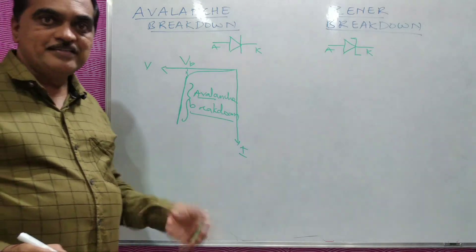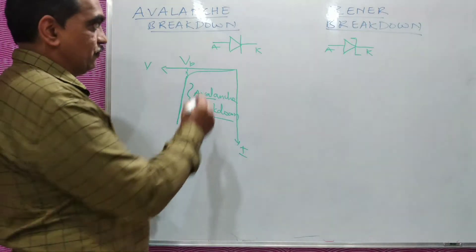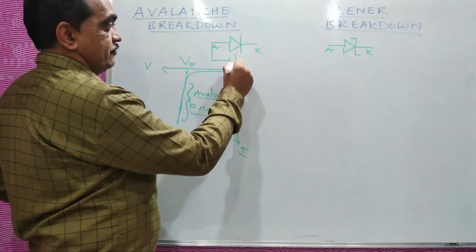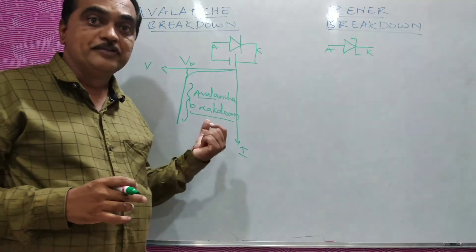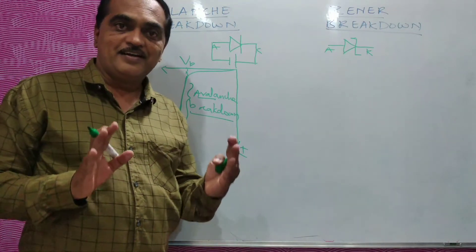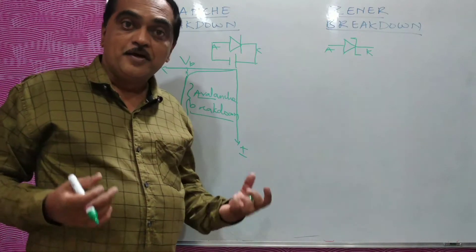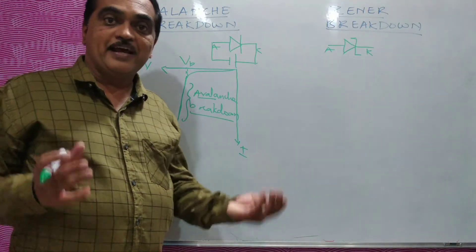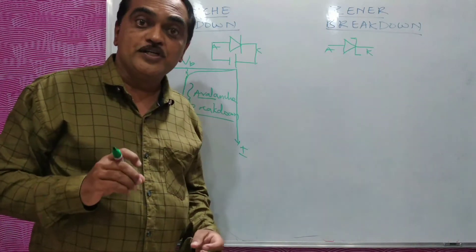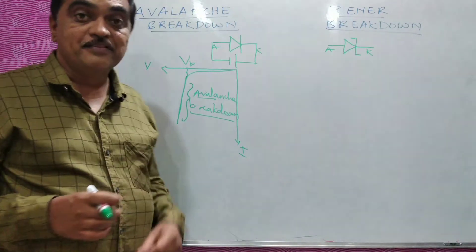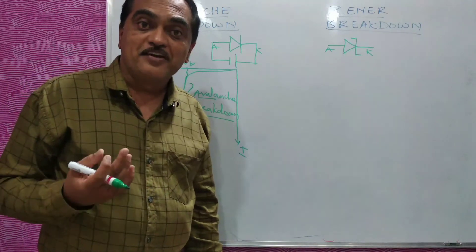Now this avalanche breakdown takes place because the depletion area in a PN junction, when you reverse bias it, the depletion area in a normal PN junction diode will be having a large area — a large depletion area. When the thermally generated minority carriers from P-type and N-type cross over, they collide with the atoms present in the depletion region. And because of the collision, there are many free electrons, many free charge carriers produced.